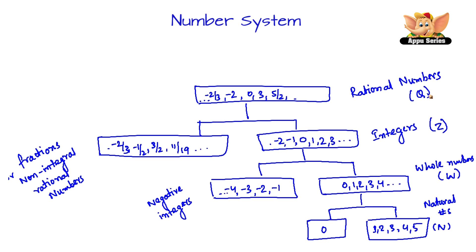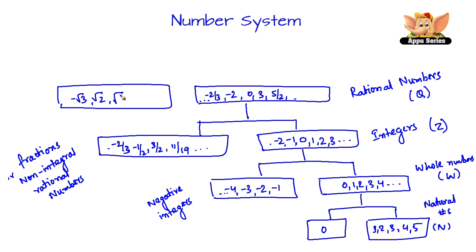Now while we are speaking about rational numbers, let us see some other kind of numbers which are called as irrational numbers. Some numbers like root 2, minus root 3, root of 1 by 5, root of 15, and so on — these are called as irrational numbers. Irrational numbers are denoted by capital letter P.